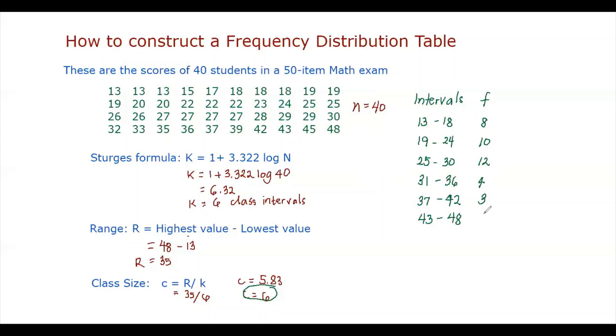Then we have to add the frequencies. It should have a total of 40. So 8 plus 10 plus 12 plus 4 plus 3 plus 3 is 40. So we have accounted for all the observations in our dataset. So this is our basic frequency distribution table. Thank you.